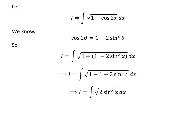1 minus 1 is 0, so we are left with the integration of square root of 2 times square of sine of x with respect to x.